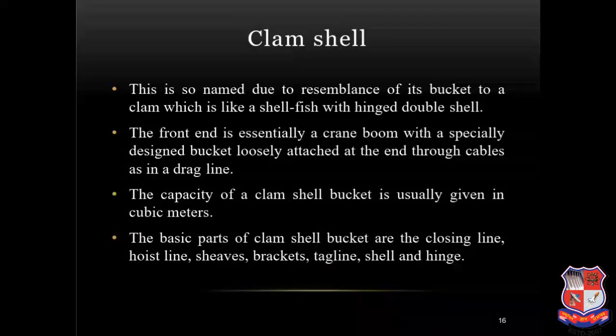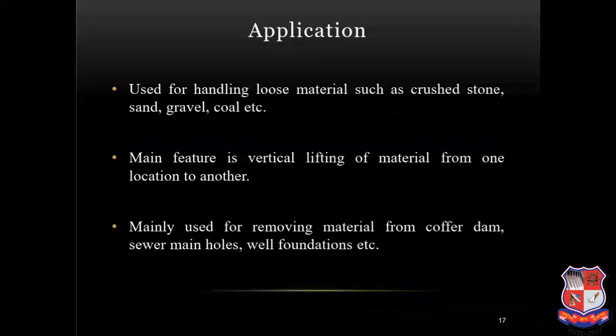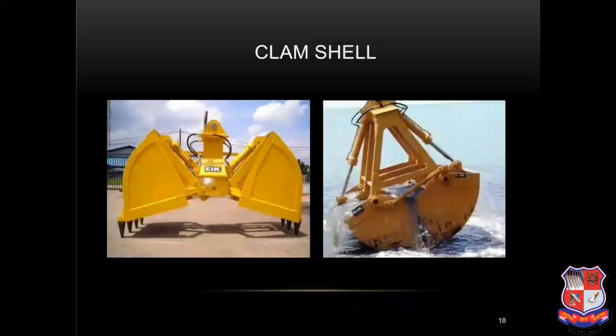The clamshell gets its name from the resemblance of its bucket to a clam, which is like a shellfish with a hinged double shell. The front end is essentially a crane boom with a special design bucket loosely attached at the end through cables, as in a drag line. The capacity of a clamshell bucket is usually given in cubic meters. Basic parts are: closing line, hoist line, sheaves, brackets, tag line, shell and hinge. Applications: it is used for handling loose materials such as crushed stone, sand, gravel, coal, etc. Its main feature is vertical lifting of material from one location to another. Mainly used for removing material from coffer dams, sewer manholes, valve foundations, etc.